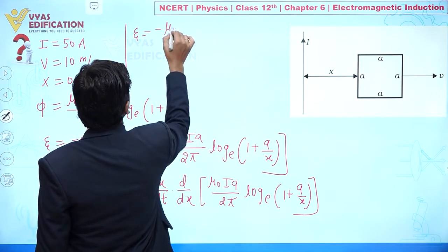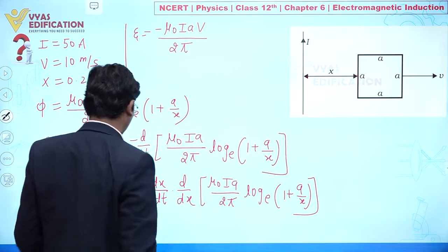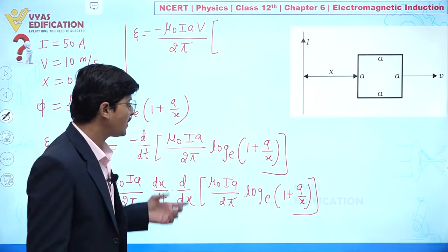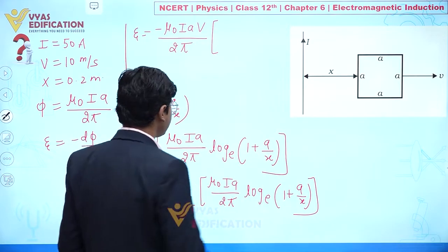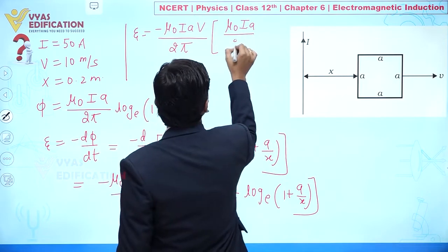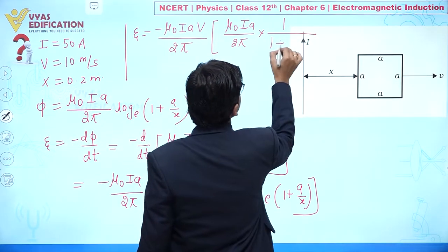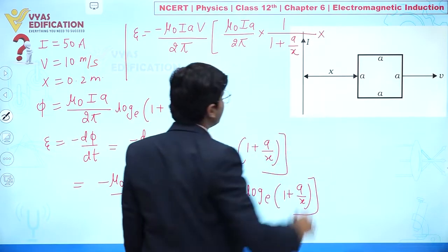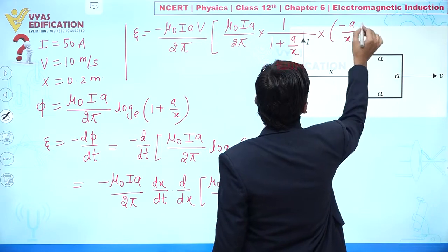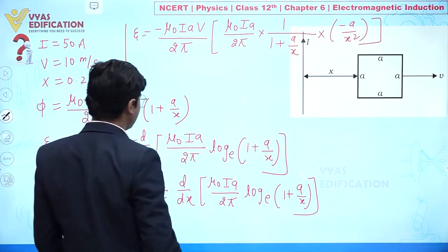Differentiating ln(1 + a/x) with respect to x: the derivative is [1/(1 + a/x)] · (−a/x²). Simplifying, this gives −a / (x(x + a)).